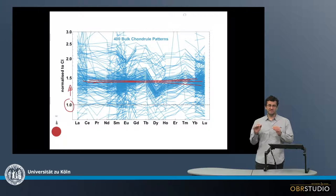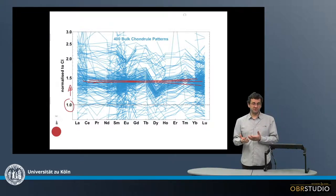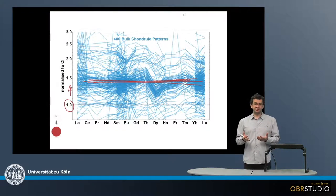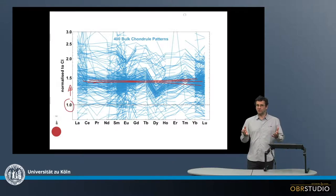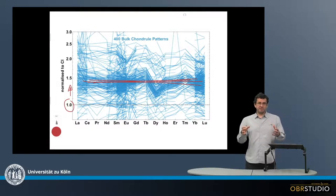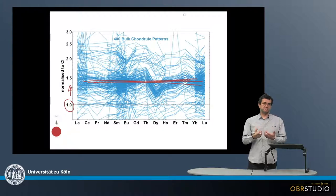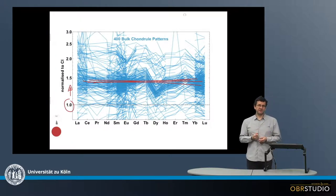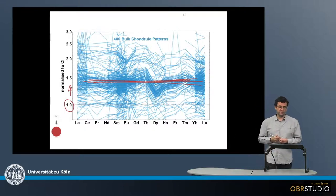Now the flat patterns tell us that the material from which chondrules formed cannot have been fractionated. So it's not possible that the chondrules come from melt on a big planetary body. And this melt, if there's a melt, usually minerals start to crystallize, for example, and then fractionation happens of the various heavy and light rare earth elements, for example.